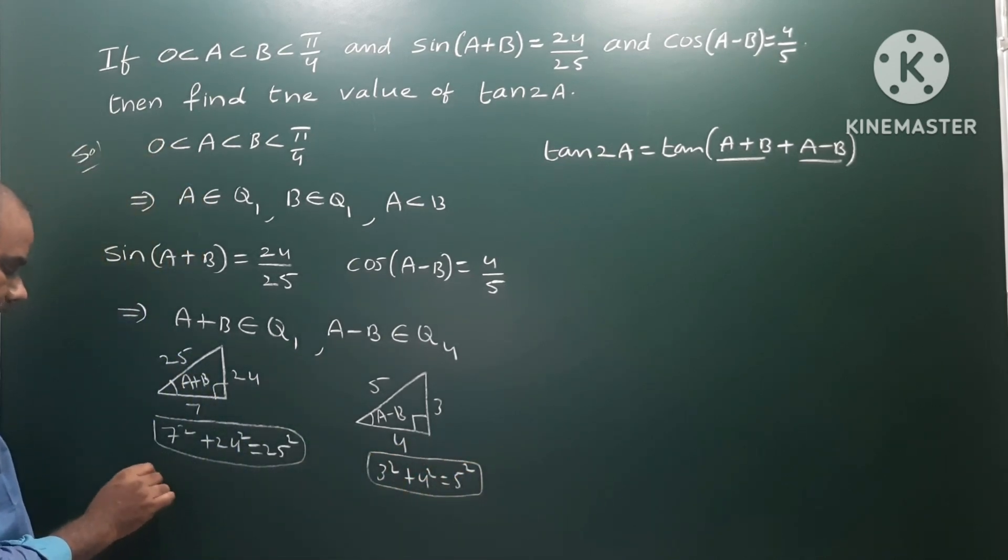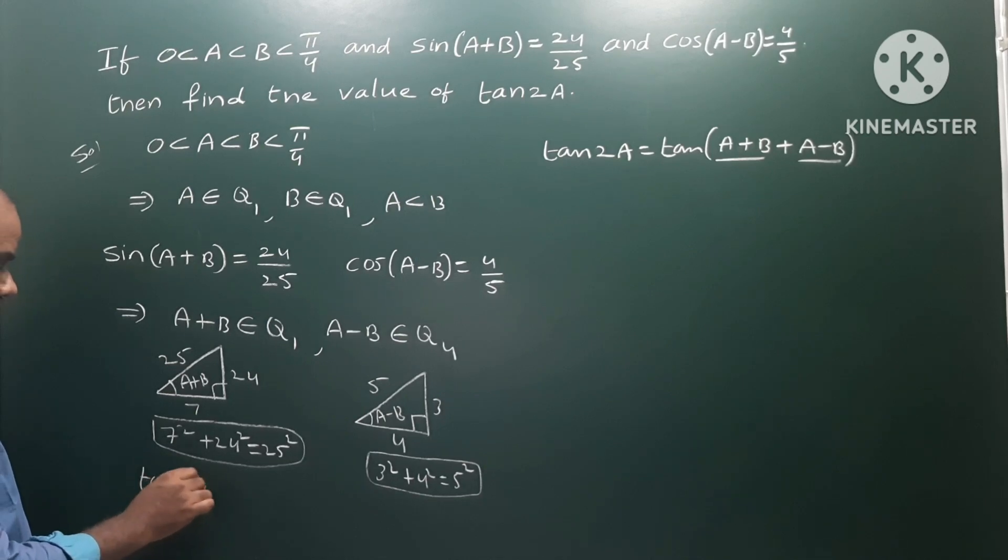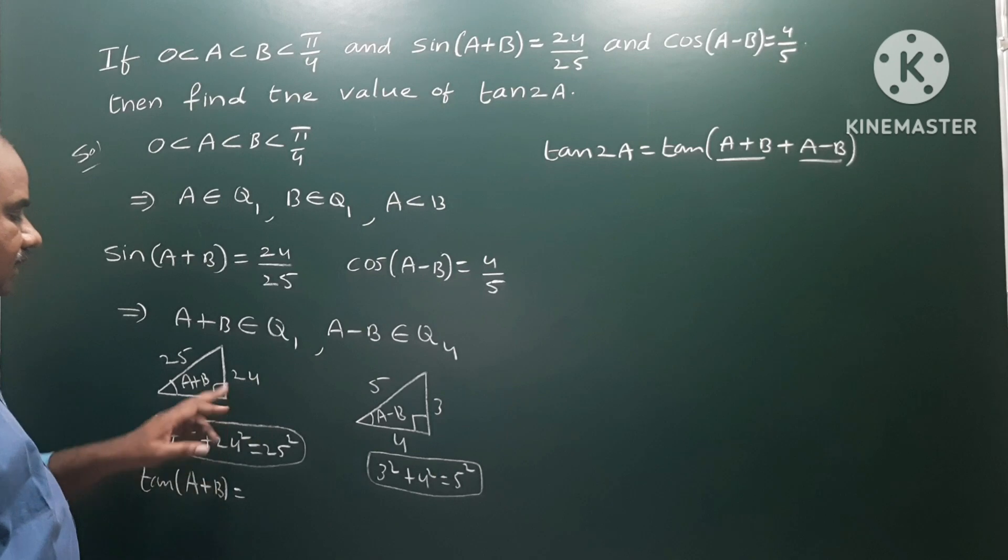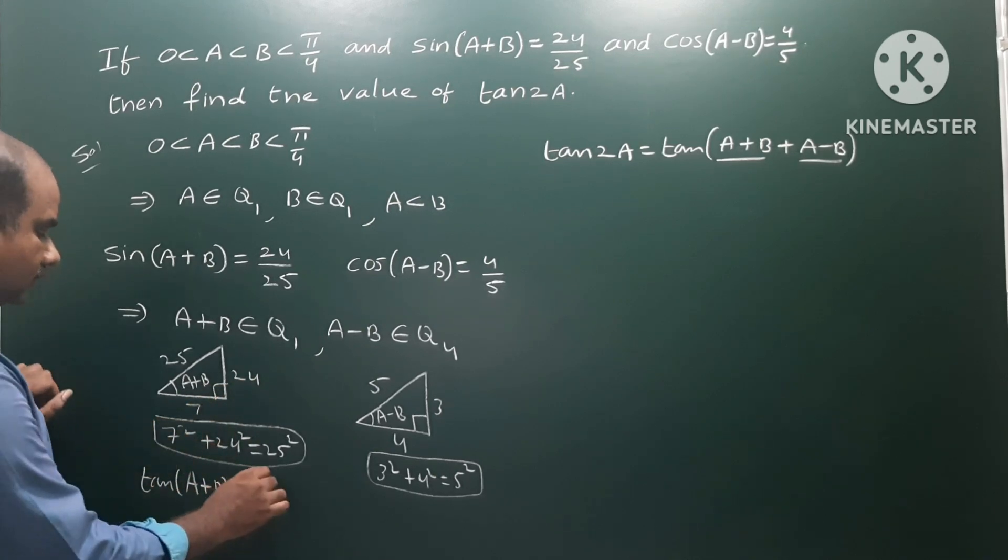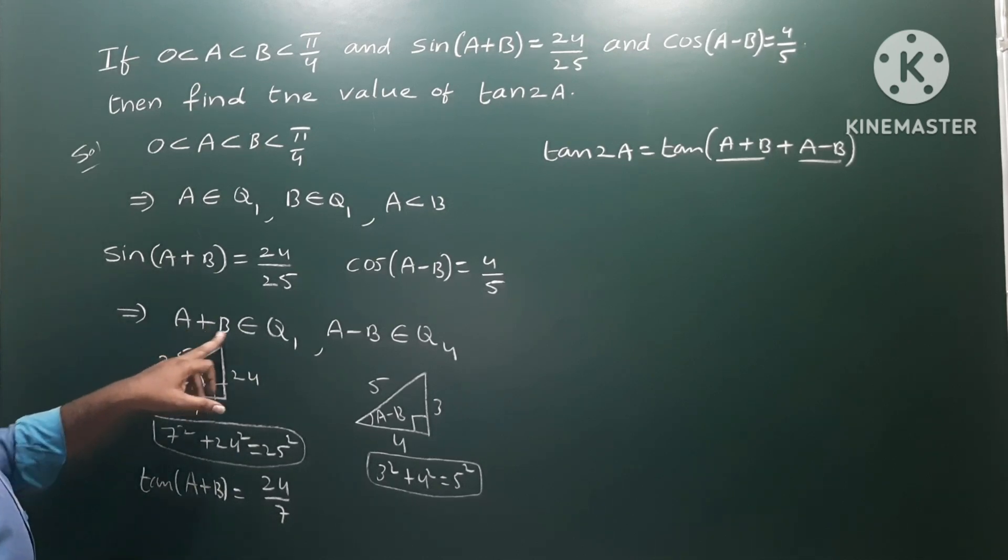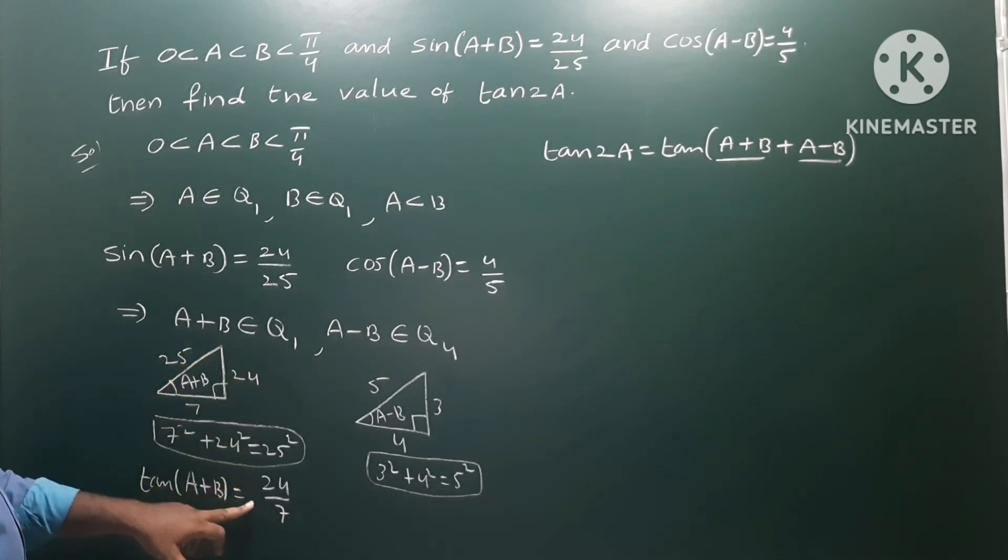Therefore tan(A+B), which is opposite side by adjacent side, equals 24/7. Since A+B belongs to the first quadrant, it is positive.